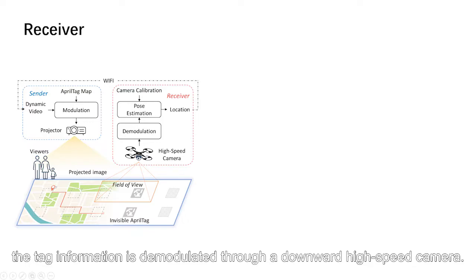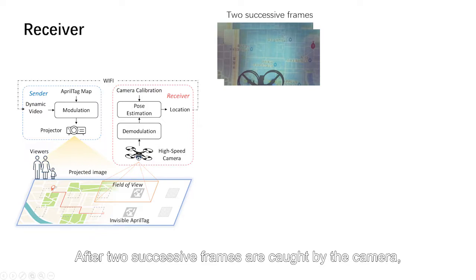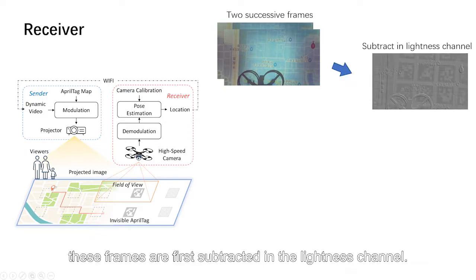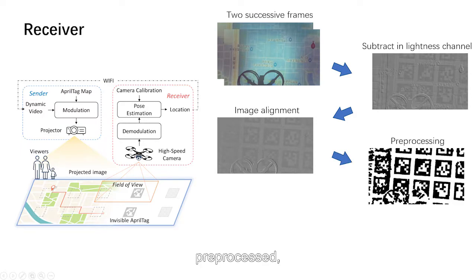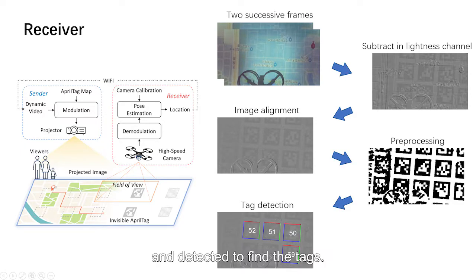For the receiver, the tag information is demodulated through a downward high-speed camera. After two successive frames are caught by the camera, these frames are first subtracted in the lightness channel, and then the frames are aligned, pre-processed, and detected to find the tags.